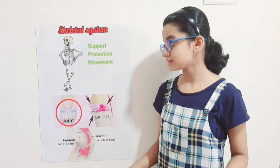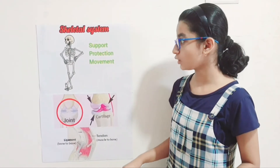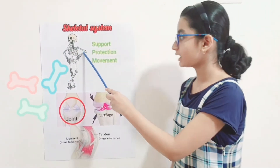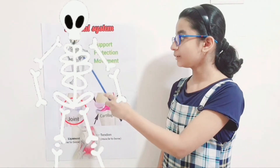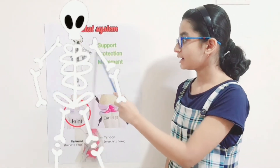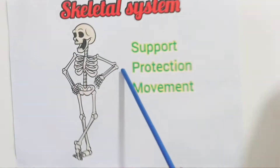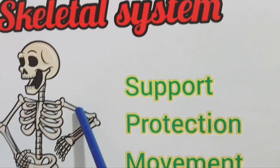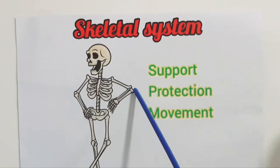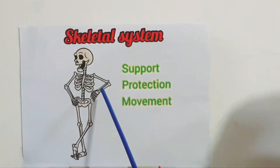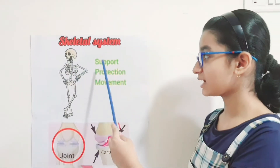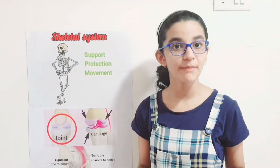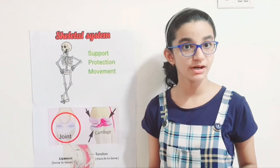The skeletal system comprises of bones. The bone is a rigid organ that forms the skeleton of the body. It is made up of calcium phosphate and calcium carbonate. It also serves as a storage area for calcium, thus playing a large role in the calcium balance of the blood.